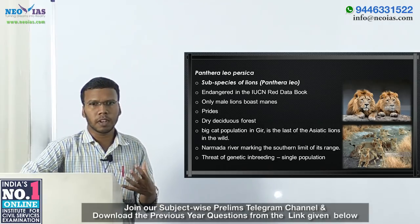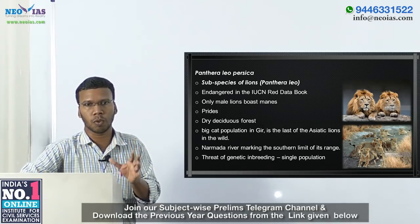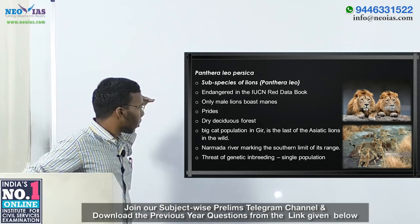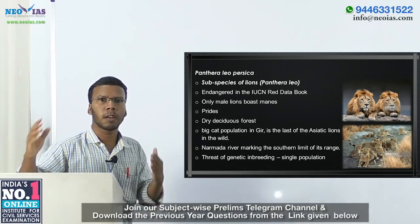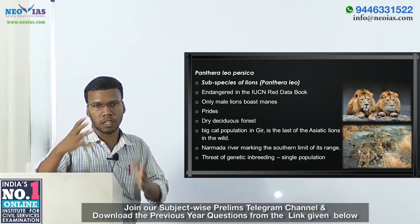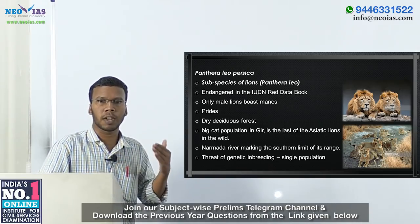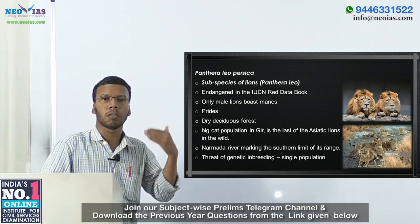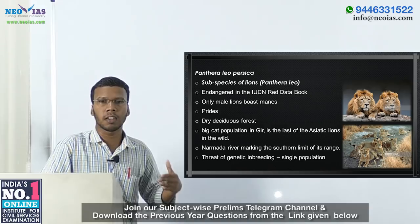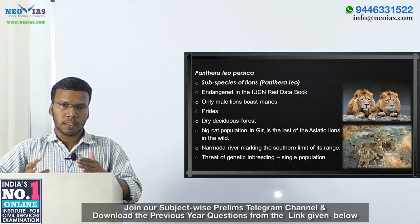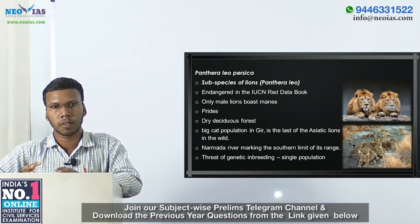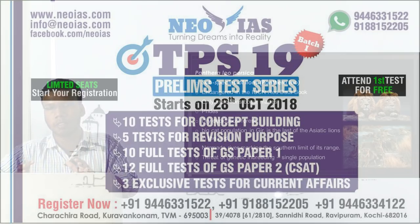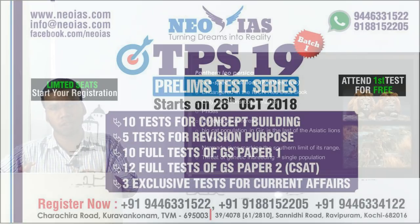The natural habitat of these lions is dry deciduous forest. In India, the habitat of Asiatic lions is mainly in the Gujarat region. In Gujarat, there is a forest called Gir Forest or Gir National Park, which is the only place where Asiatic lions can be found in the wild naturally.